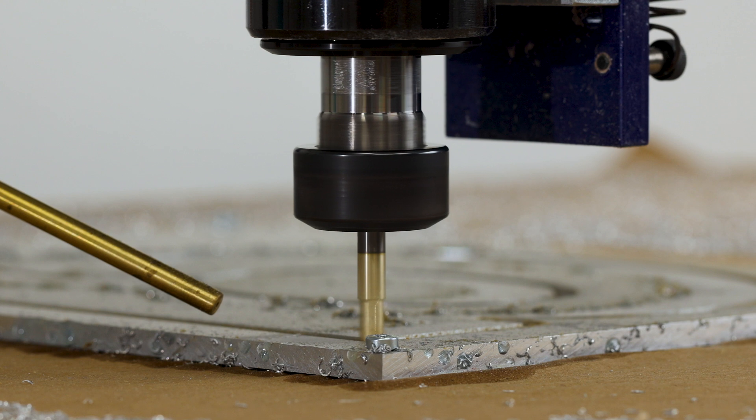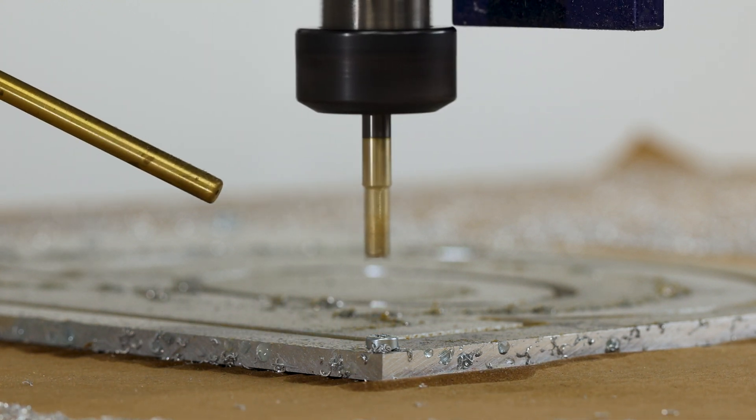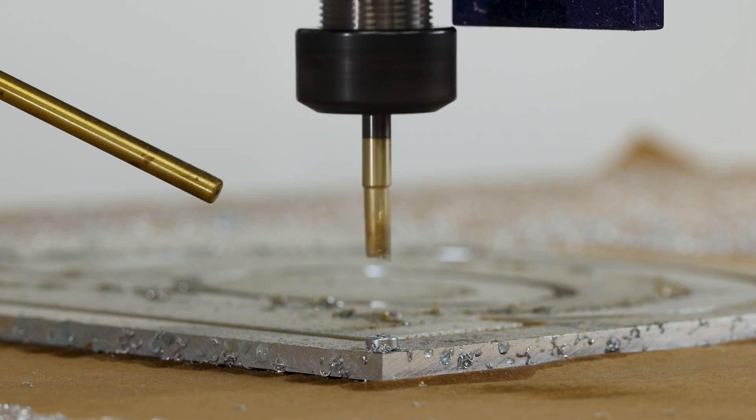Cutting aluminum is easy as long as you use the right bit, keep it cool, evacuate your chips, and use the correct feeds and speeds.